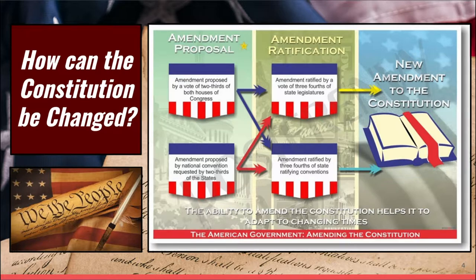In order to approve the amendment once it's been proposed, there are two ways to do that. It can be ratified by a vote of three-fourths of the state legislatures, with each state individually voting on it. Or the states could hold ratifying conventions to go around their legislatures. It is up to the states to decide how they go about ratifying or rejecting an amendment.